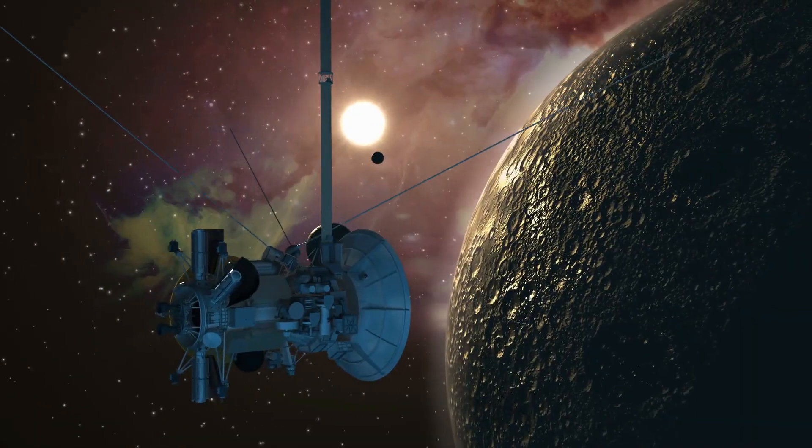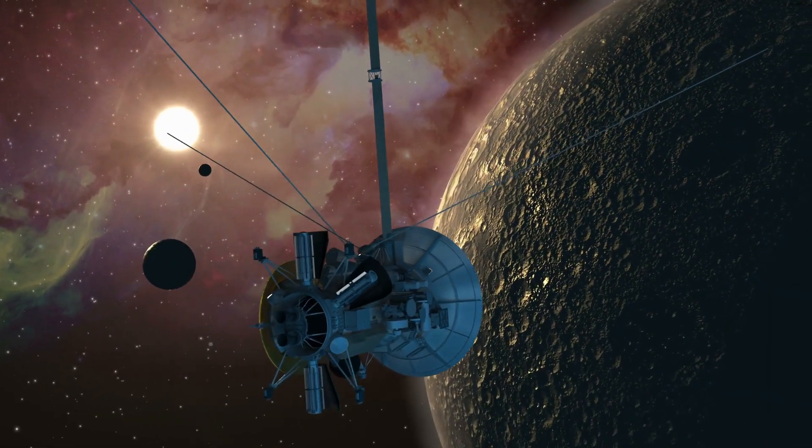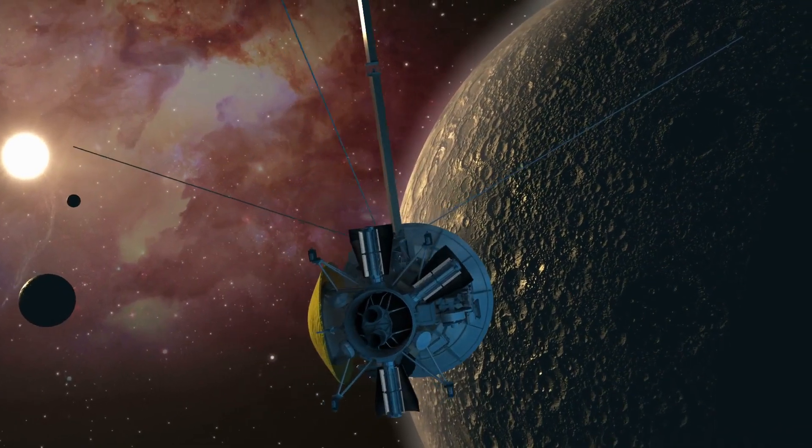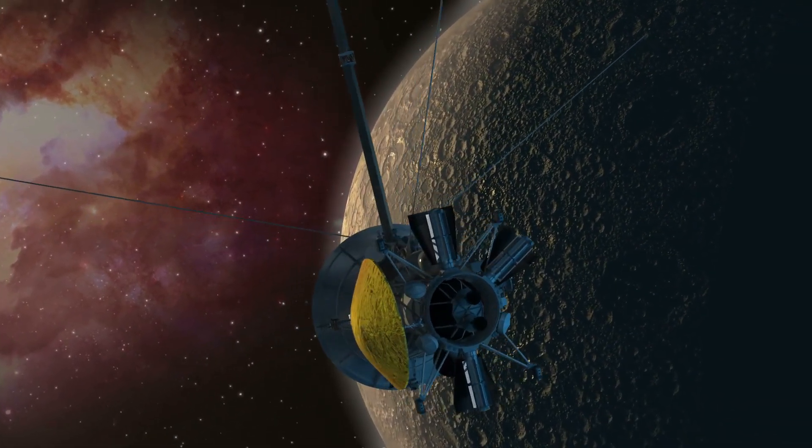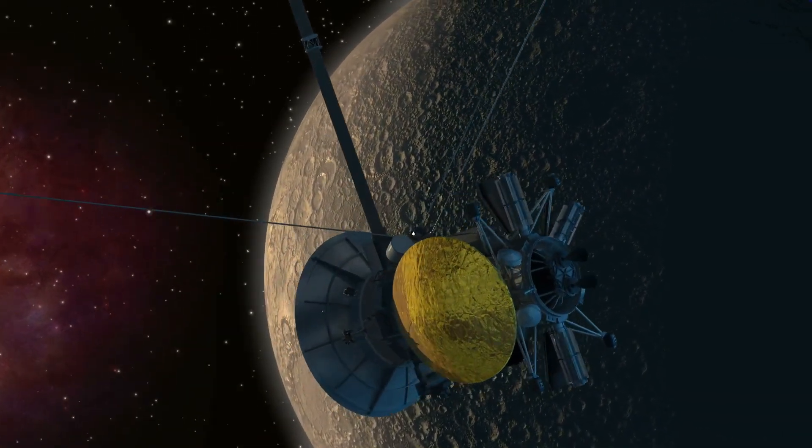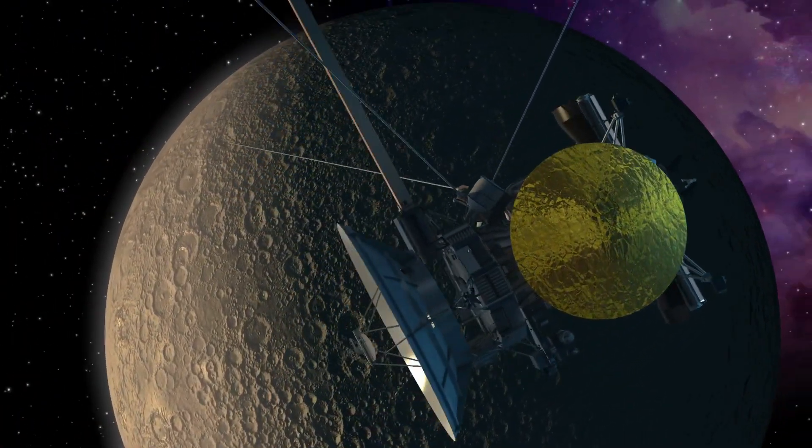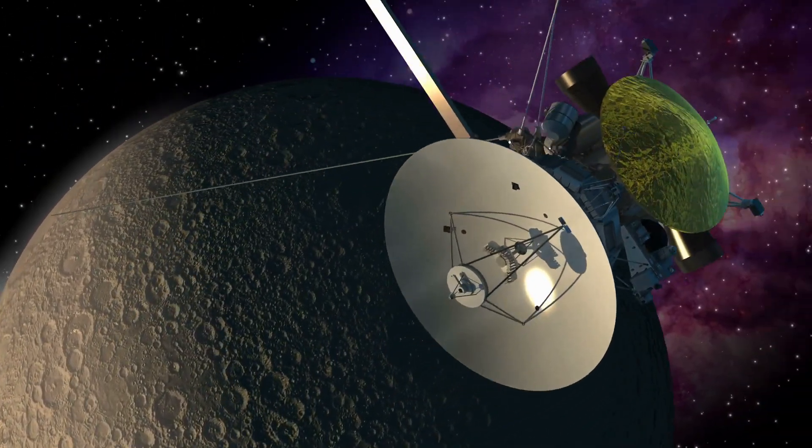During its flyby, the spacecraft photographed Saturn's moons Titan, Mimas, Enceladus, Tethys, Dione, and Rhea. Based on incoming data, all the moons appeared to be composed largely of water ice.